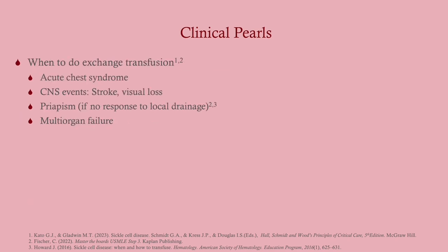Exchange transfusion involves simultaneously giving blood while removing the patient's blood containing sickle cells, replacing it with healthy blood. This can be done manually or with a machine. Indications for exchange transfusion include: acute chest syndrome, CNS events such as stroke or vision loss, priapism unresponsive to drainage, and multi-organ failure — really extreme circumstances.